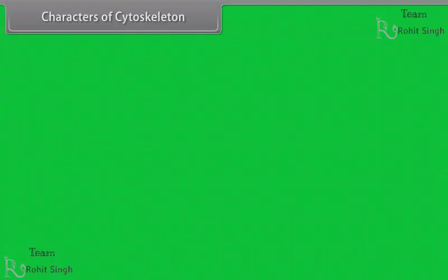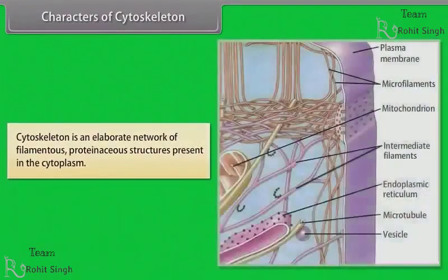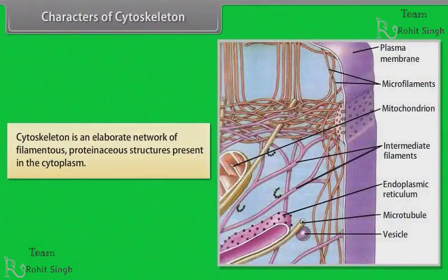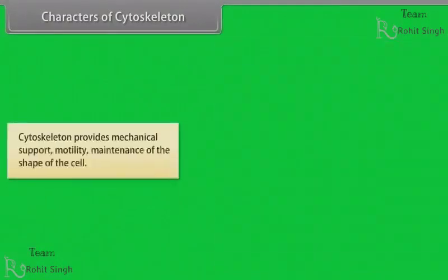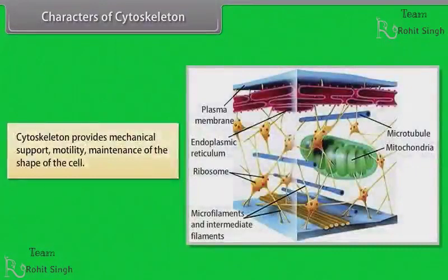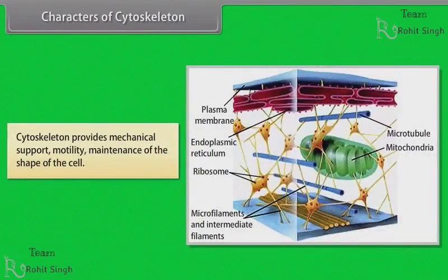Characters of cytoskeleton. Cytoskeleton is an elaborate network of filamentous, proteinaceous structures present in the cytoplasm. Cytoskeleton provides mechanical support, motility, and maintenance of the shape of the cell.